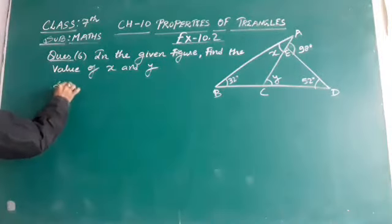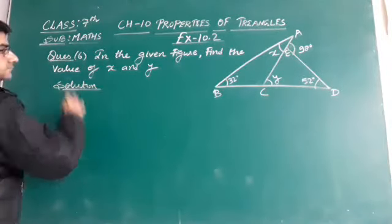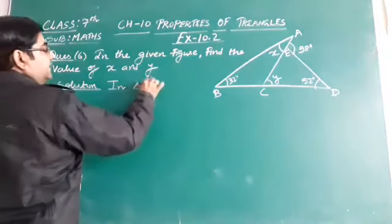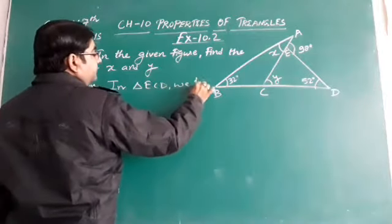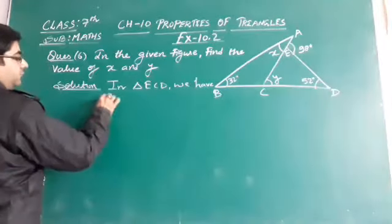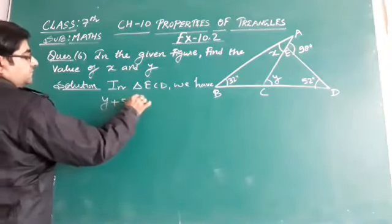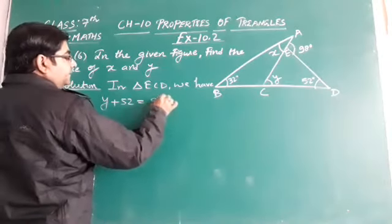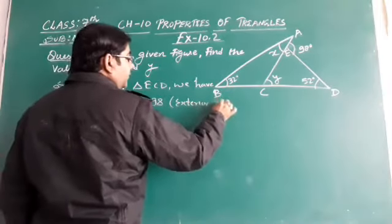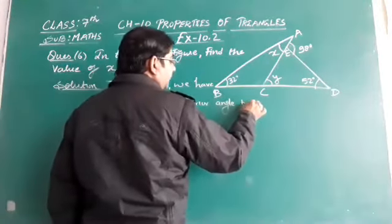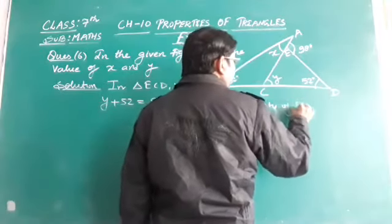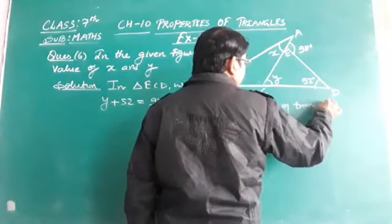We will apply this property in triangle ECD. We have sum of y and 52 equal to 98, by using exterior angle property of triangle.